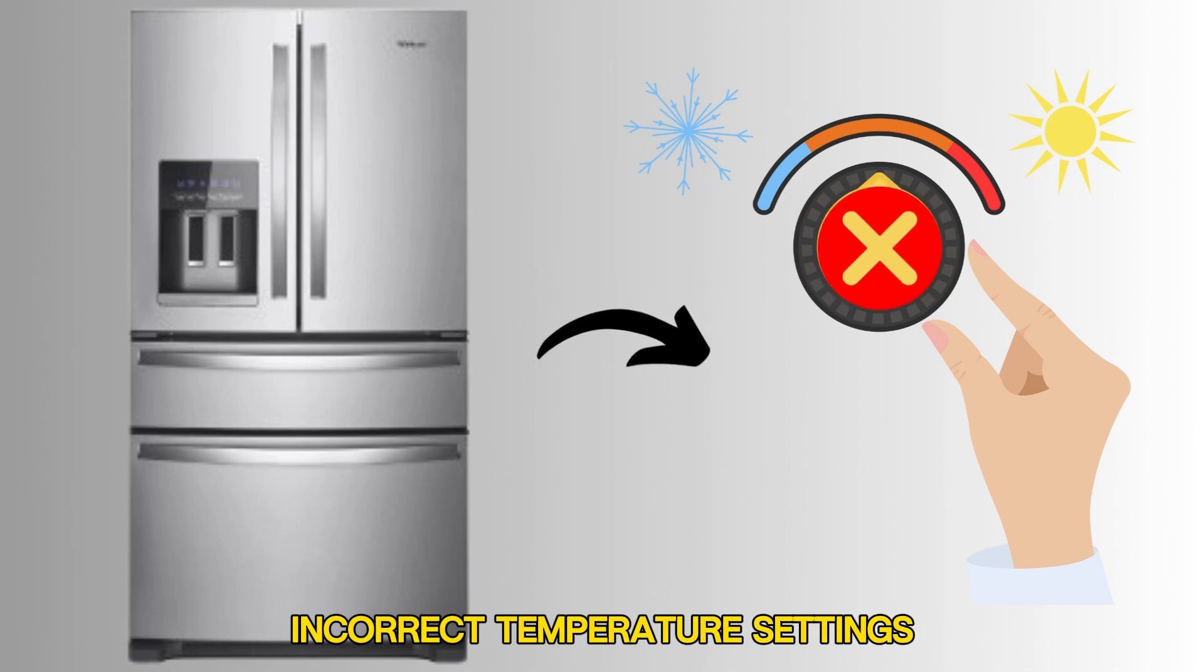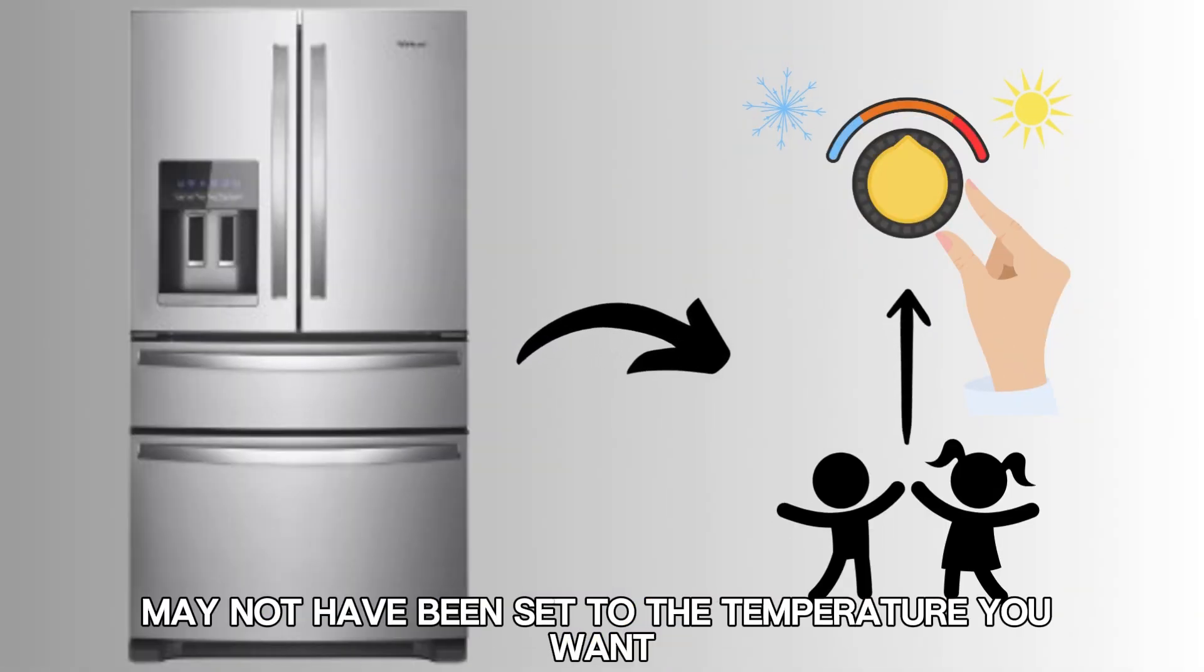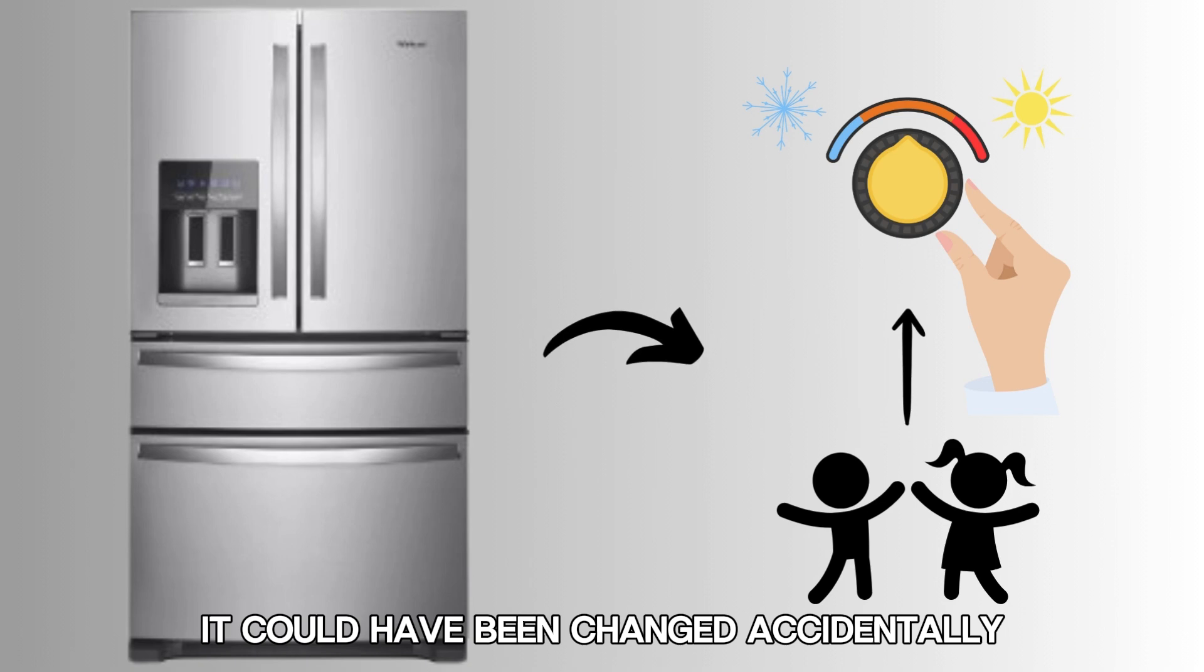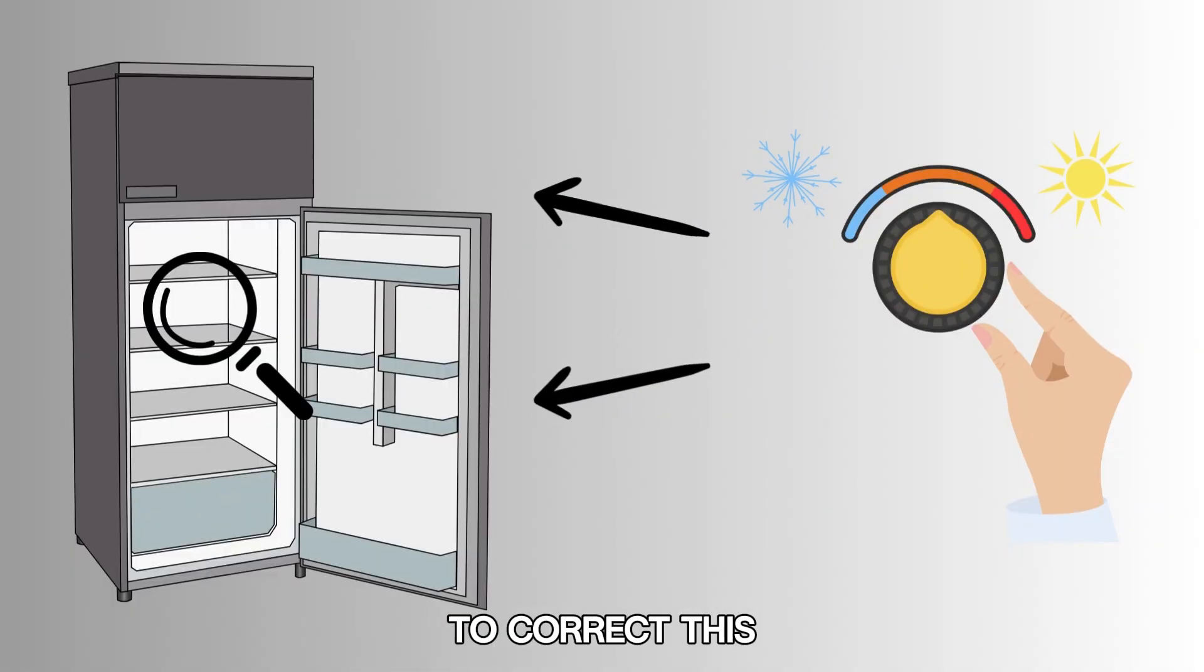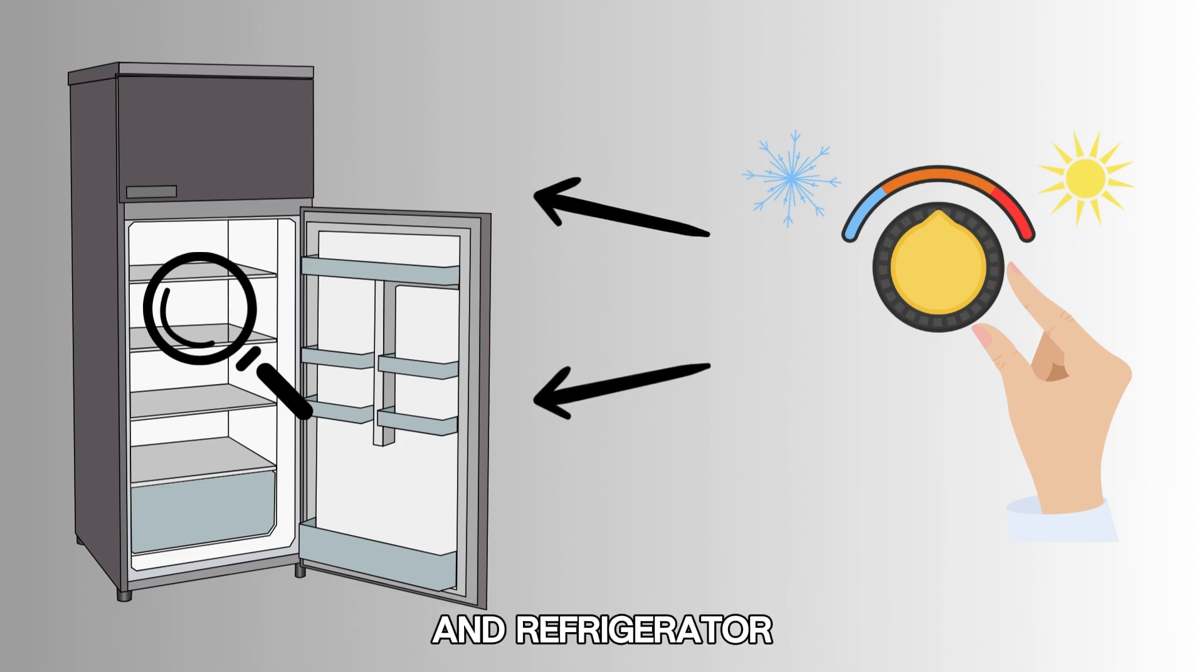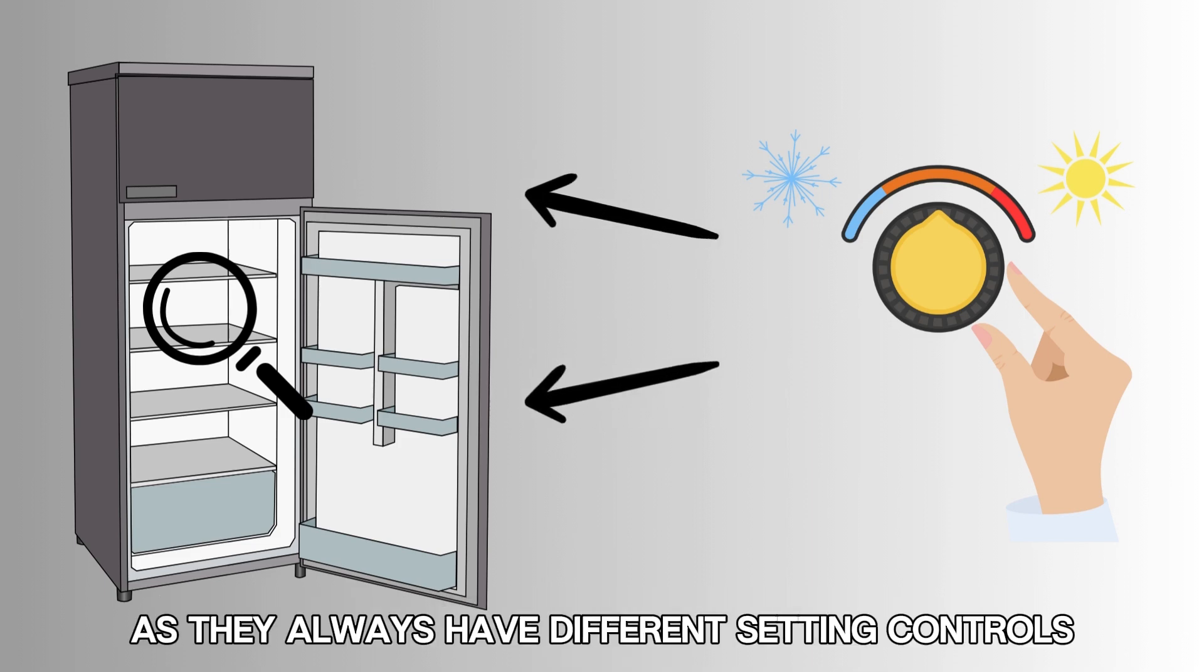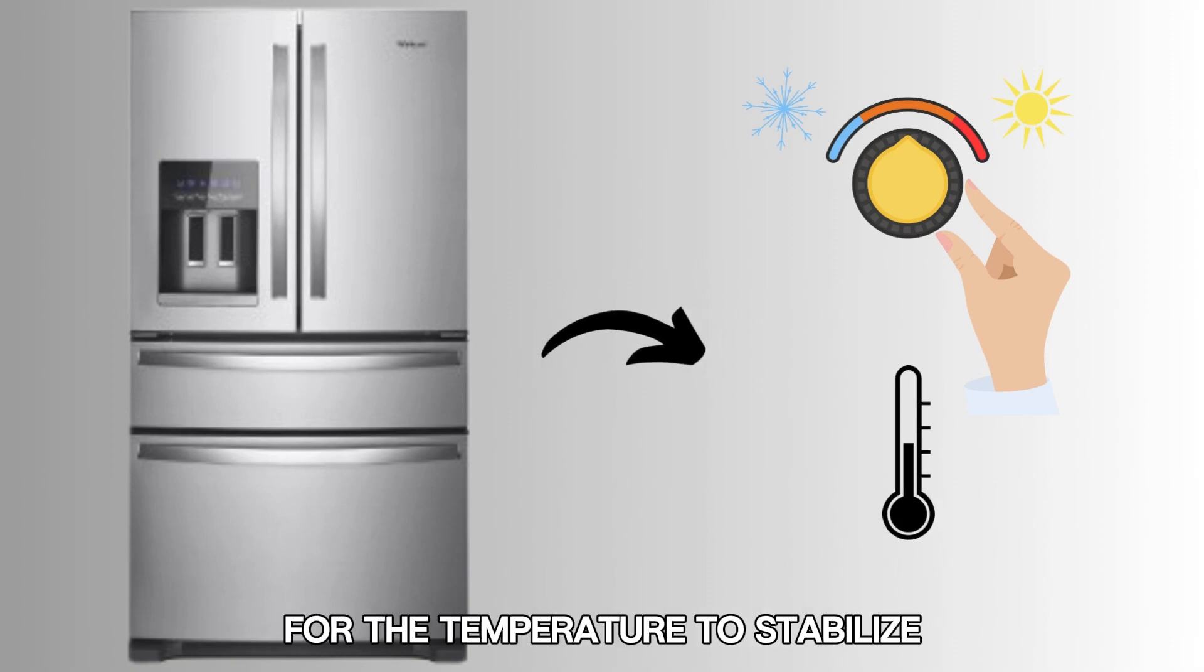Incorrect temperature settings. Your refrigerator temperatures may not have been set to the temperature you want. It could have been changed accidentally or even by children. To correct this, check the temperature settings of both your freezer and refrigerator as they always have different setting controls. Give it about a day or so for the temperature to stabilize.